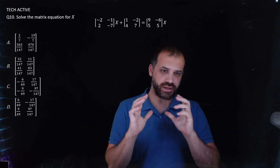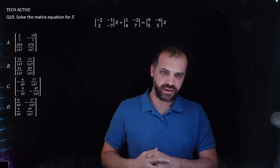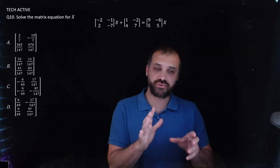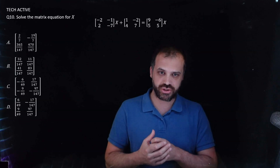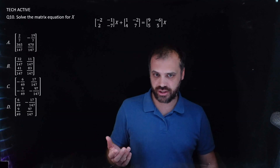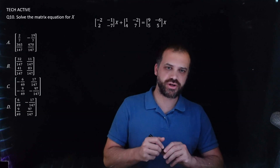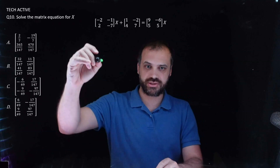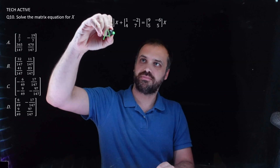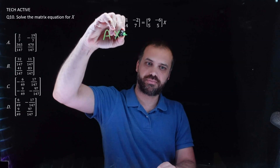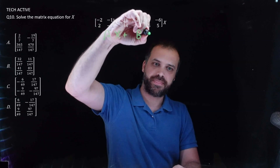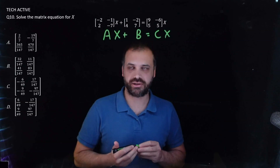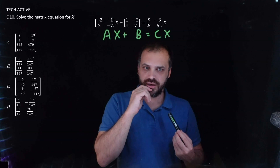Okay, have a read of it, have a try, see how you go. My friends insisted we put this question in because matrix equations pop up — every year there's some sort of matrix equation. So the way I approach these is to rewrite in terms of A's, B's, and C's. So we have A multiplied by X plus B equals C multiplied by X — I'm just calling all the matrices A, B, and C.